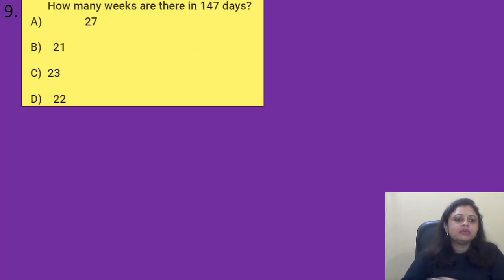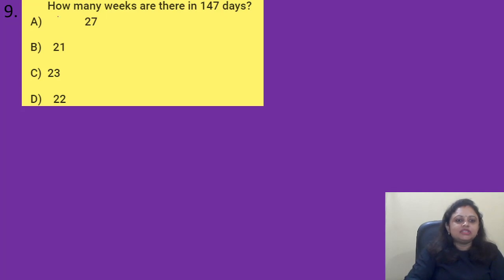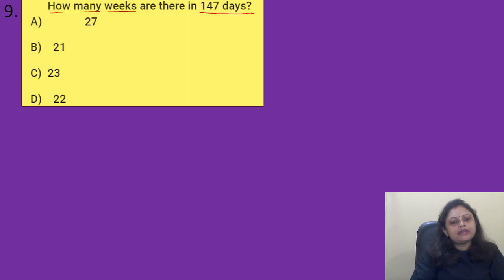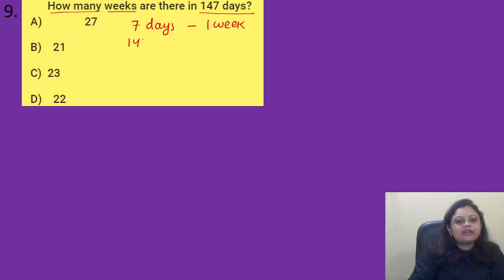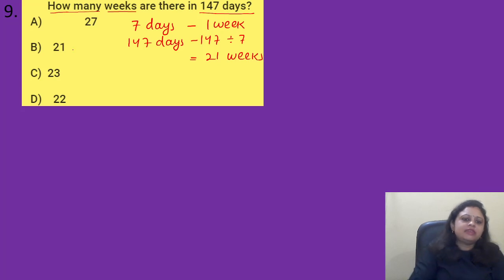Coming to the next question: how many weeks are there in 147 days? Option A) 27, B) 21, C) 23, D) 22. Seven days make 1 week. So 147 days divided by 7 is equal to 21 weeks. The correct answer is option B, 21.